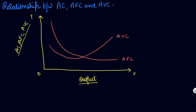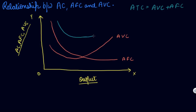Now let us make your average total cost curve. Your average total cost is the summation of average variable cost plus your average fixed cost. So your average total cost will be somewhere here.